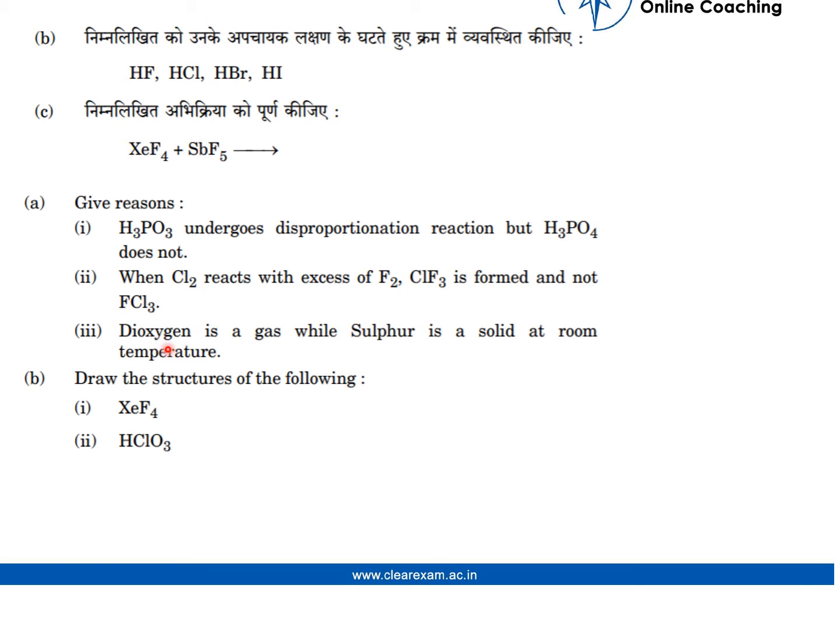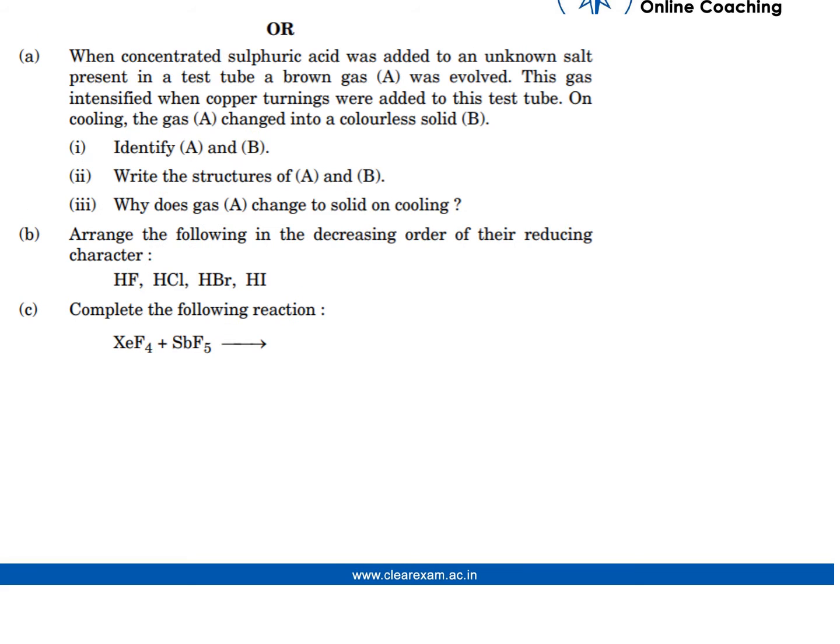Third, dioxygen is a gas while sulfur is a solid at room temperature. Part (b): draw the structures of the following: XeF4, HClO3. OR: when concentrated sulfuric acid was added to an unknown salt present in a test tube, a brown gas A was evolved.